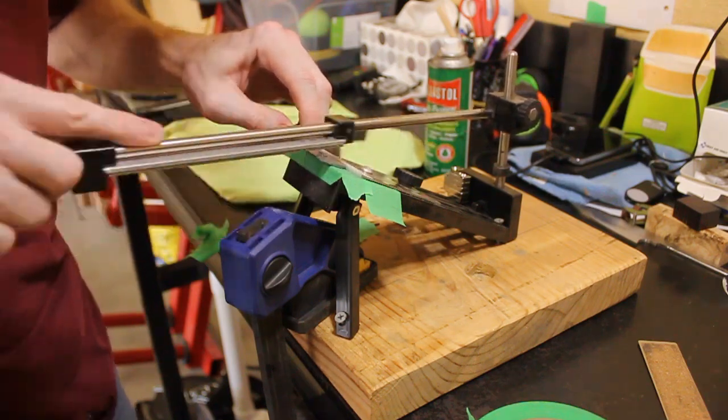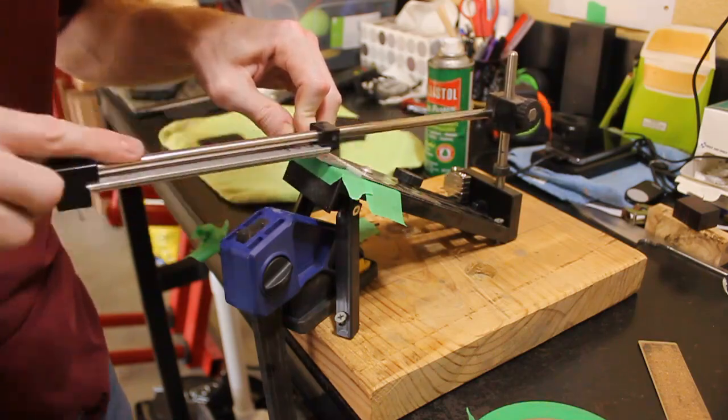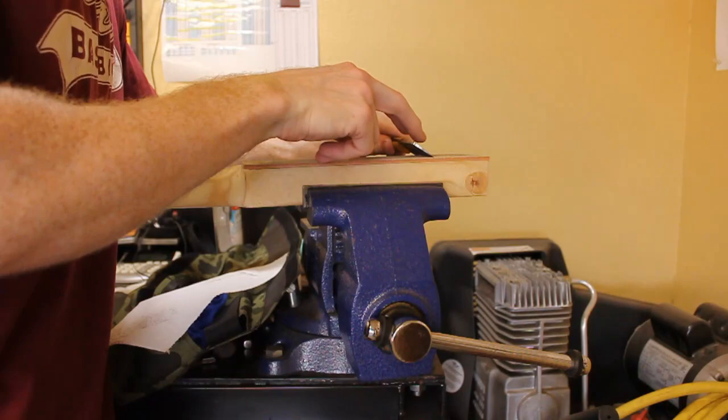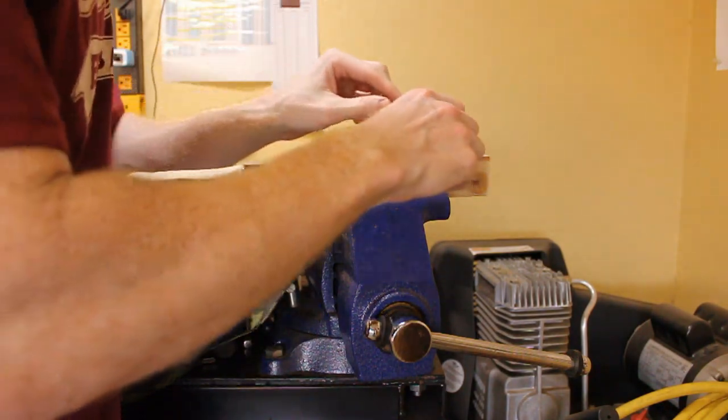I brought this thing over to my Edge Pro clone. I have some diamond stones, starting with a 120 grit diamond stone, then moved up to a 400 grit stone, then we strop the blade on some leather.